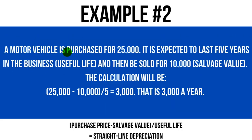Example two: a motor vehicle is purchased for $25,000 — that's the purchase price. It is expected to last five years — that's the useful life — and then be sold for $10,000, that's the salvage value. So $25,000 minus $10,000 gives us $15,000, divided by five years is $3,000. So $3,000 every year will be posted to the accounts for five years. At the end of five years, the asset will show a value of $10,000, which is the salvage value.